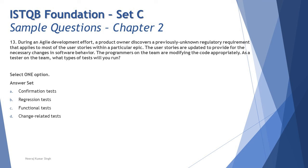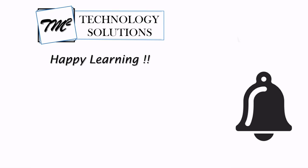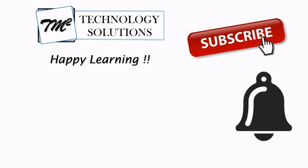The right answer is D — change-related test — because this is a category that includes both confirmation and regression testing. Both need to be performed here to make sure the changes are effective and do not have a side effect. That's all from this tutorial closing Chapter 2. We'll be back with Chapter 3. Feel free to comment below — thanks for watching, and happy learning!